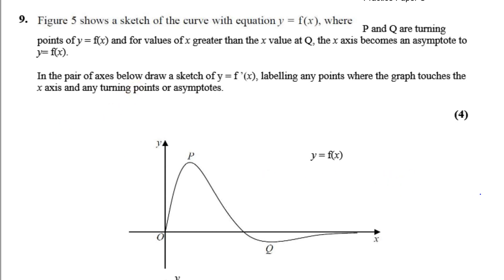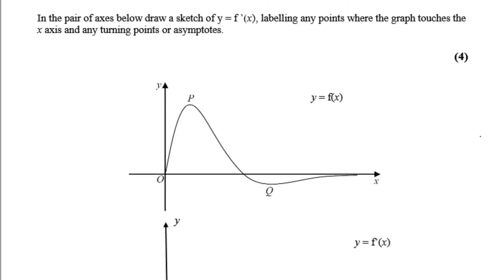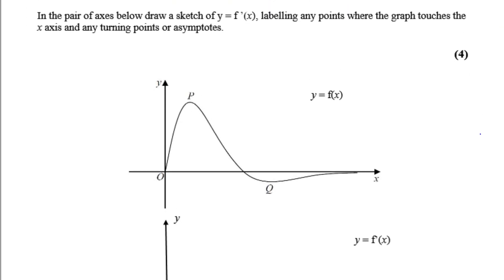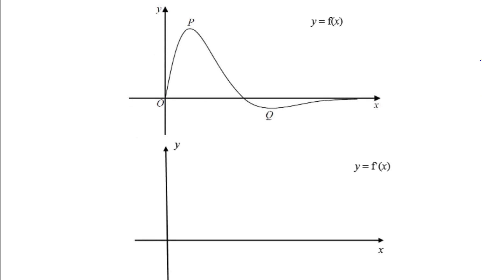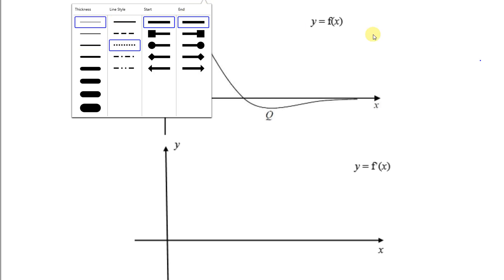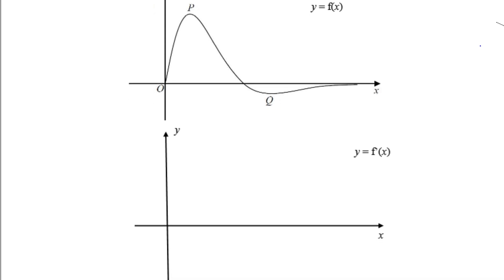In the pair of axes below, draw a sketch of y equals f dash of x, the gradient function of y equals f of x, labelling any points where the graph touches the x-axis and any turning points or asymptotes. So now, what we've got to do here is think very clearly. This is a topic where many students, and some teachers as well, get confused — but it's nothing to be confused about, because basically we are sketching the gradient function of this.